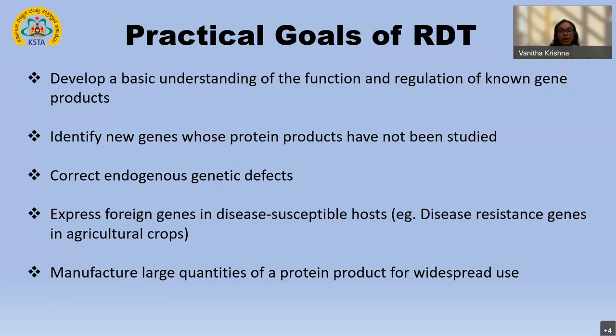The second most important aspect achievable through RDT is identifying novel genes altogether which have not been touched upon at all — this is essential for progress in the field of medicine and treatment. The third aspect is to correct certain endogenous genetic defects, an example being sickle cell anemia. The fourth aspect is expressing certain novel or foreign genes in disease-susceptible hosts — for instance, making an agricultural crop resistant to a particular disease or able to grow in unsuitable conditions.